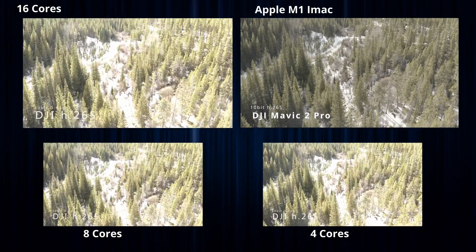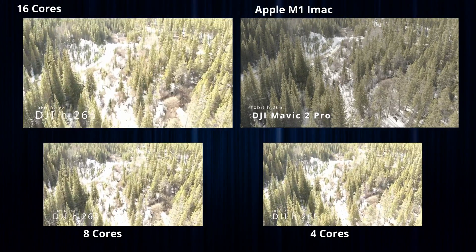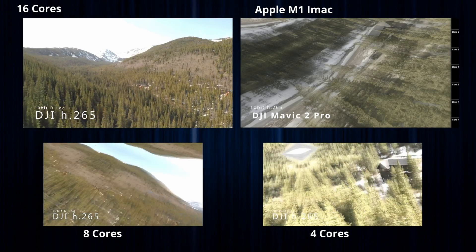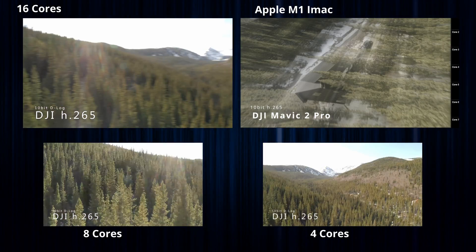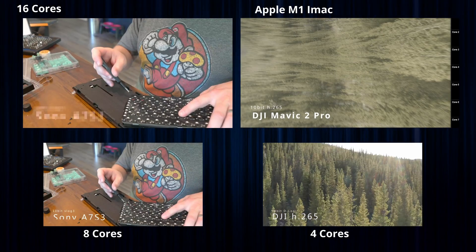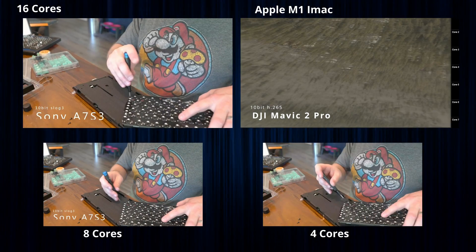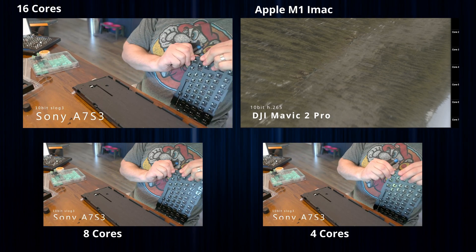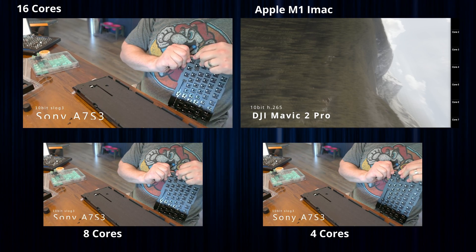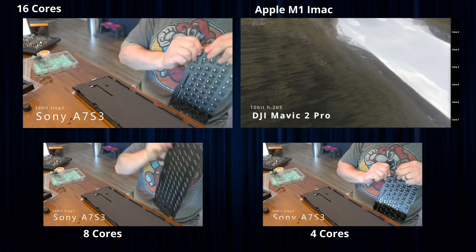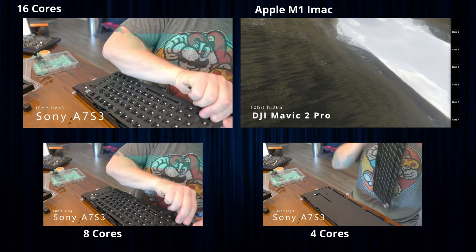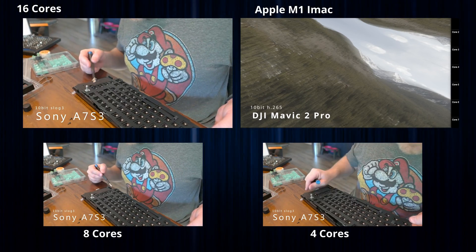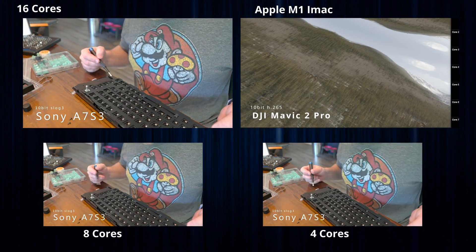We're looking at the performance differences in how many frames and how much stuttering occurs for each of the playback windows. You'll notice the 16 cores on the top left is the smoothest. Meanwhile, every time we hit Fusion, as you can see here with the Mavic 2 Pro showing in the top right, the M1 bogs down hard.